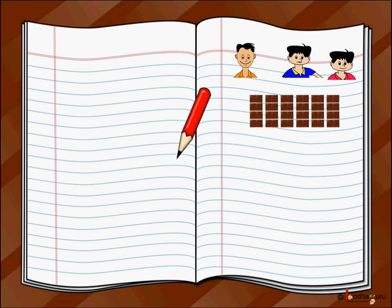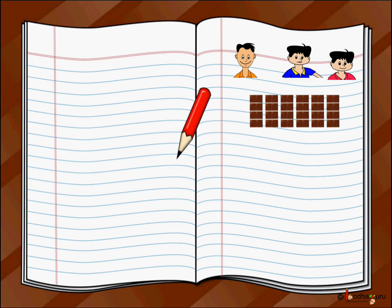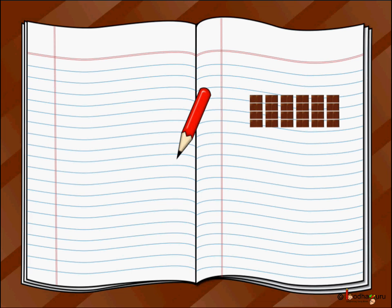One day Amman's father bought six chocolates. Amman has two brothers. So how did Amman's father divide the chocolates amongst his three children? Amman's father has to divide six chocolates among three children — Amman and his two brothers. So we have to divide six by three.